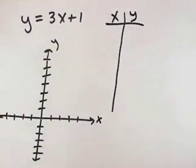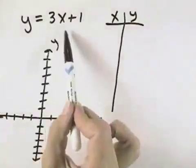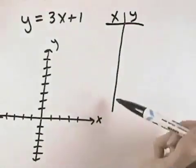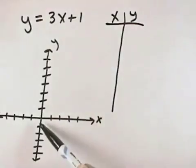For this problem, we want to find five solutions of y equals 3x plus 1. We want to organize our work for those solutions in a table form so that we can use these values to then graph our equation.